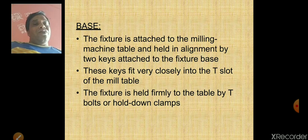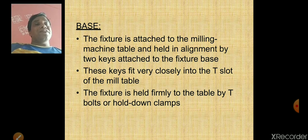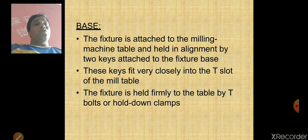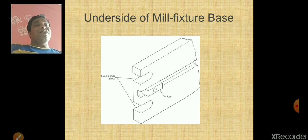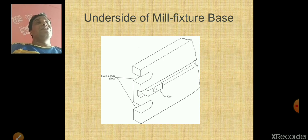Generally there are two T-slot keys attached, which have two slots helpful for fixing the fixture on the machine table firmly. This figure shows the base which is used to fix the fixture on the table of the machine.